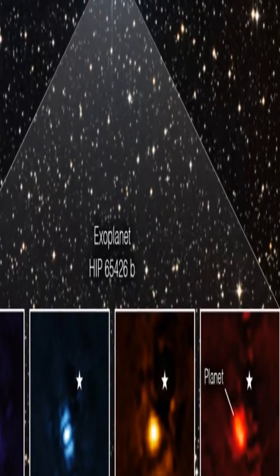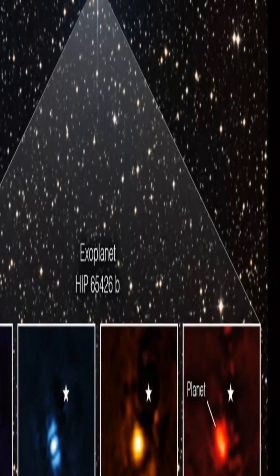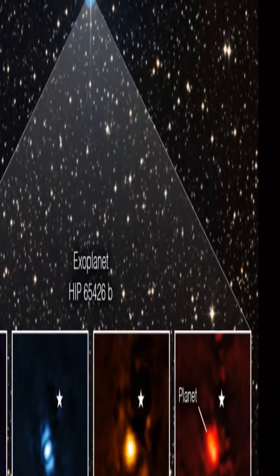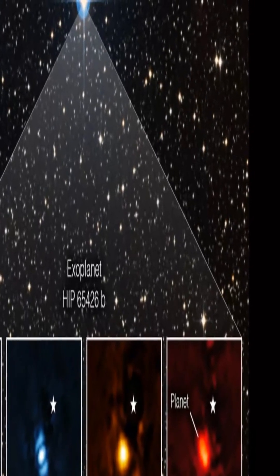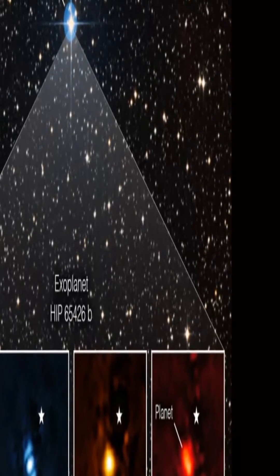Compared to Earth's 4.5 billion years, HIP 65426 b is a very young planet, only 15 to 20 million years old. Because of its gaseous composition, life is not likely to exist on this young planet.